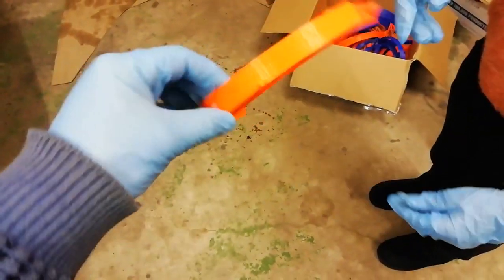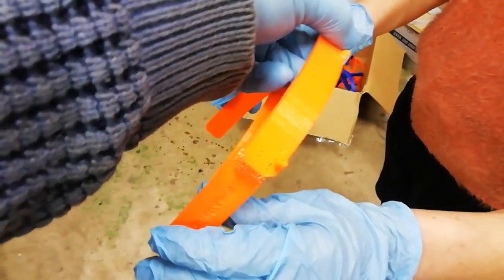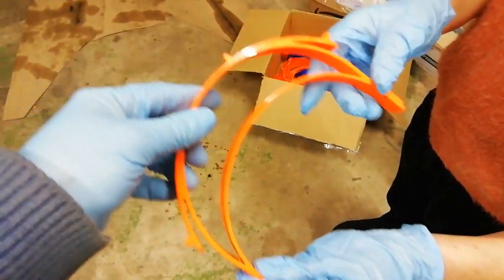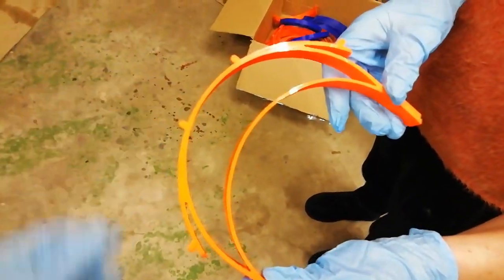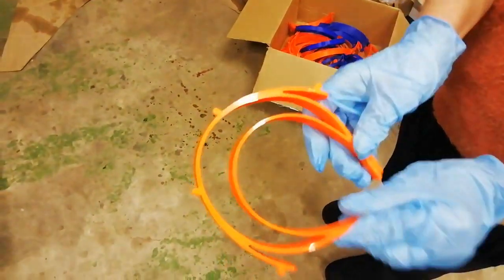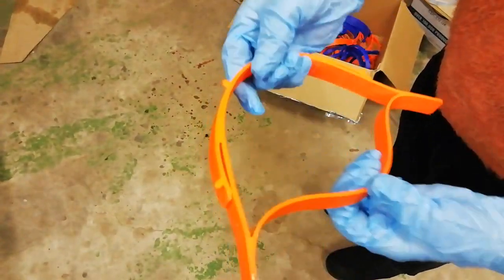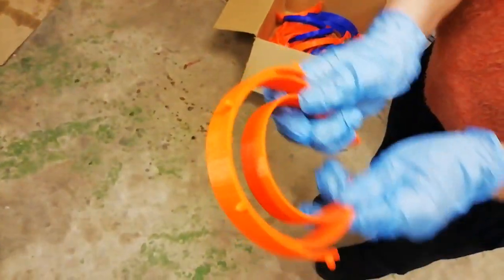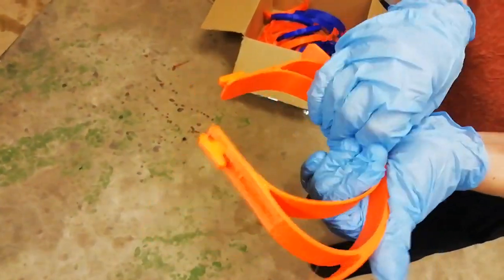Just going back to this one that failed because of voids, if you have a look at my glamorous assistant bending and twisting it, you won't hear any noises from it at all. That's how it should be. If it wasn't for the voids this would be perfect.